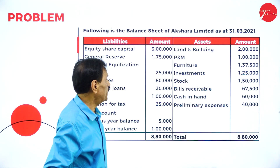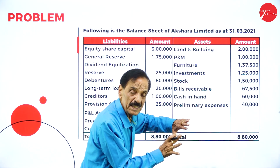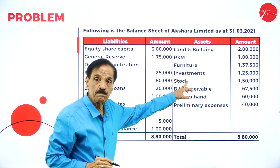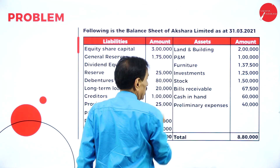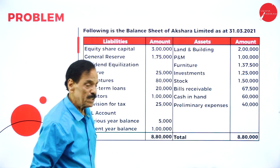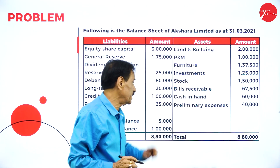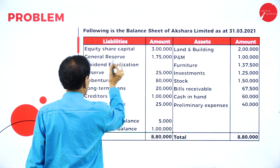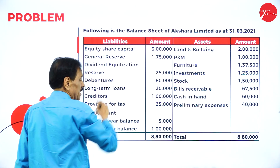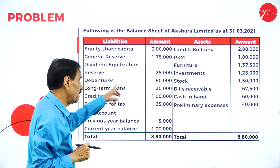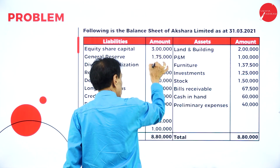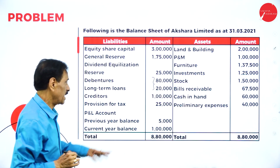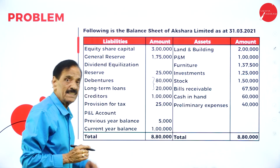This is the problem given. We identify which are current assets and which are fixed assets. Building, plant and machinery, and furniture are fixed assets. Investment comes under investments. Stock, debtors, and cash in hand are current assets. Preliminary expenses should not be taken. Equity share capital, general reserve, and dividend equalization reserve all belong to equity shareholders. Debentures and long term loan are debt.